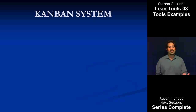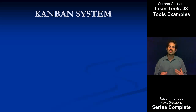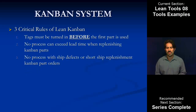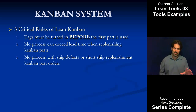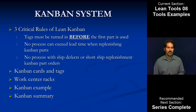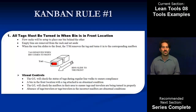Moving on to Kanban — this is a little more complicated compared to some of the other tools because there are a few more rules, but there's a lot more flexibility in how to actually apply it. There are three critical rules of Kanban: first, the tags have to be turned in before the first part is used; second, no process exceeds the lead time; and third, no process ships defects or short-ships parts. We'll also look at cards and tags, the information on them, an example using work center racks as intermediate stores, and then wrap up with a quick summary.